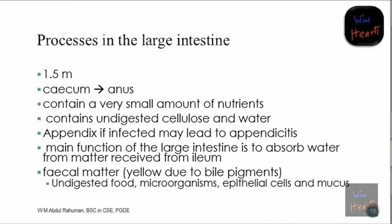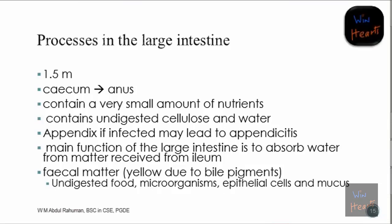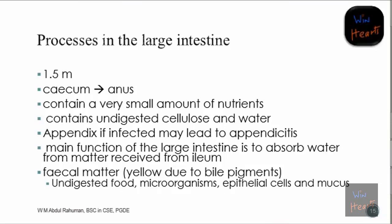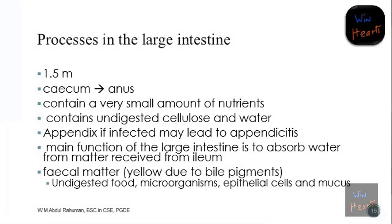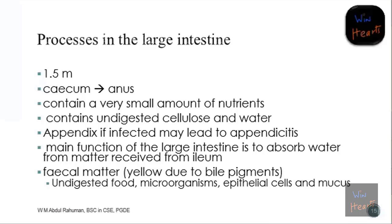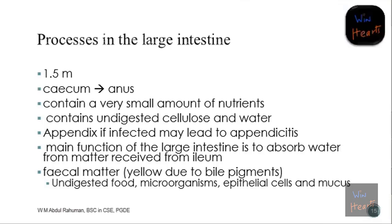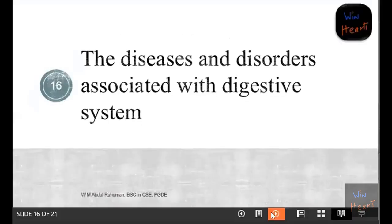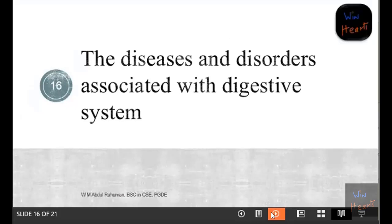Whatever material is available in our large intestine at the end is called fecal matter. It is yellow in color due to the bile pigment. This fecal matter contains undigested food, microorganisms, epithelial cells, and mucus. Mucus facilitates the passing out of fecal matter.